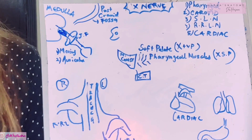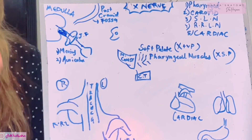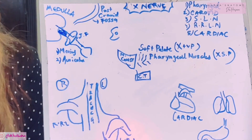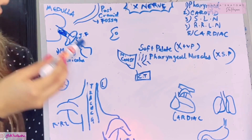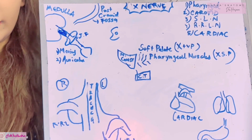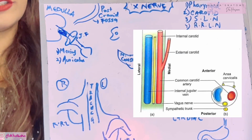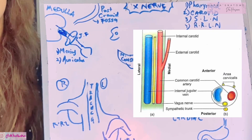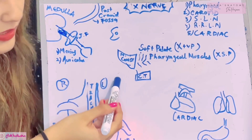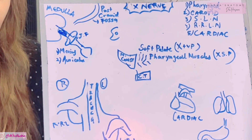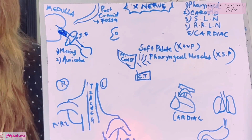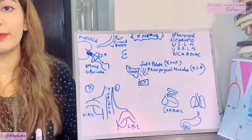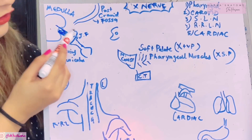First, the vagus nerve goes through the jugular foramen. The 9th, 10th, and 11th nerves all pass through the jugular foramen. The vagus nerve lies posterior to the glossopharyngeal nerve. Once it leaves the jugular foramen and exits the cranial cavity, it enters the carotid sheath — lying medial to the internal jugular vein and lateral to the internal carotid artery, posteriorly placed. It then goes down to the root of the neck and enters the thorax, where it gives branches that spread into the thorax and abdomen.